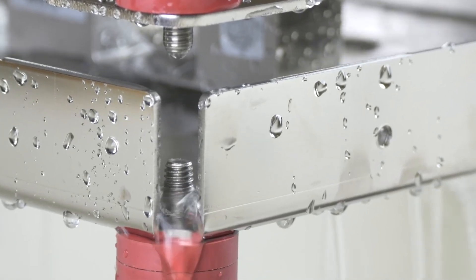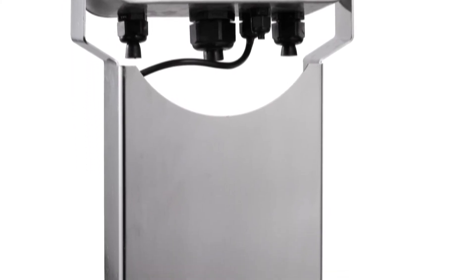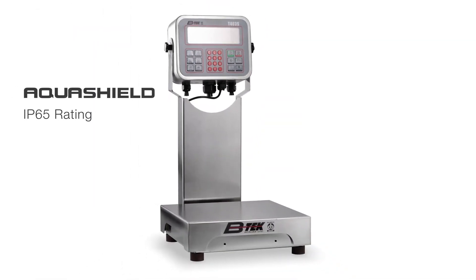Made from rugged, heavy gauge, 304 SAE stainless steel, the AquaShield comes in two models: the standard AquaShield, which has an IP65 washdown rating, and the AquaShield Max, which has an IP69K high-pressure washdown rating.